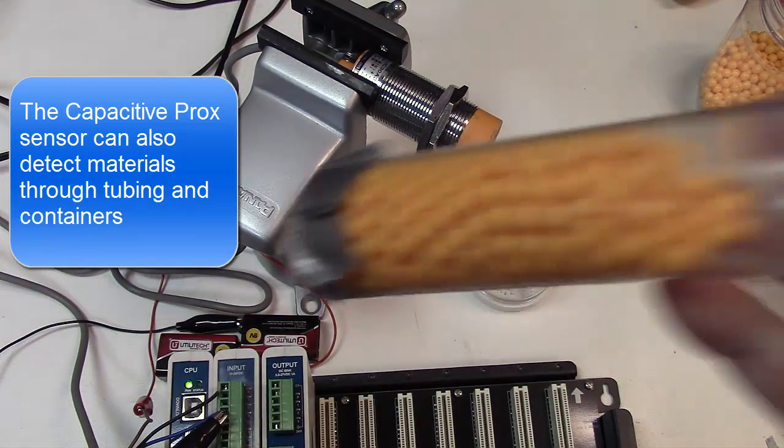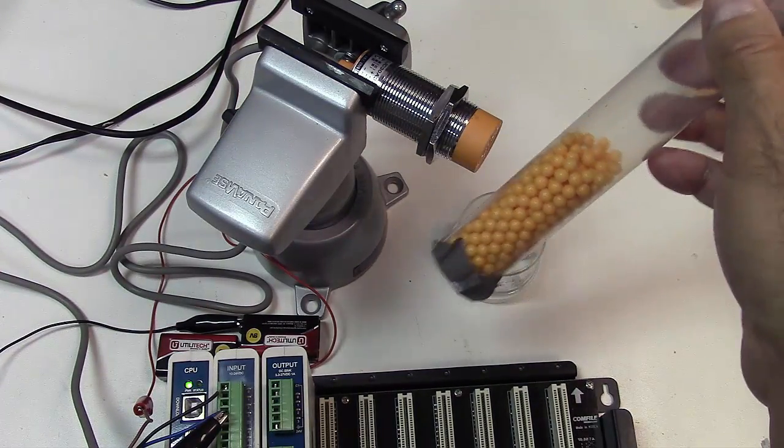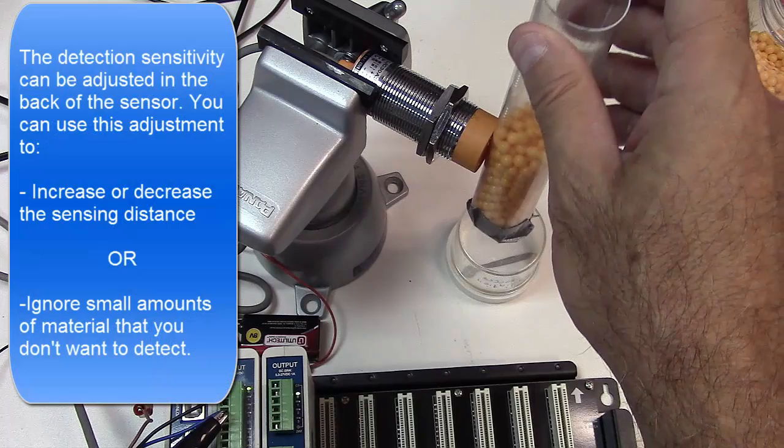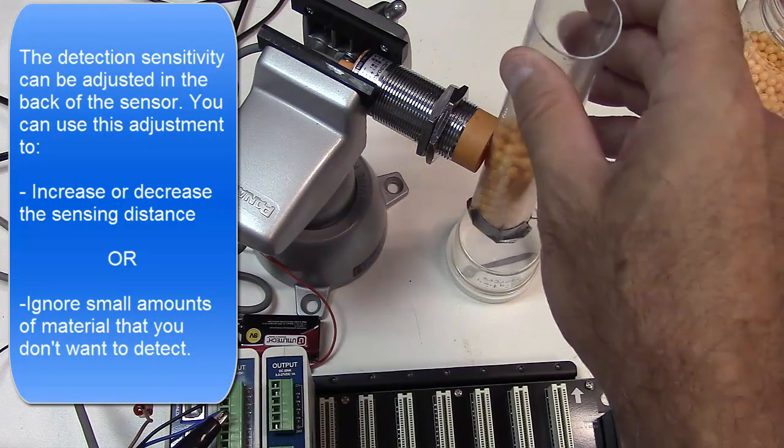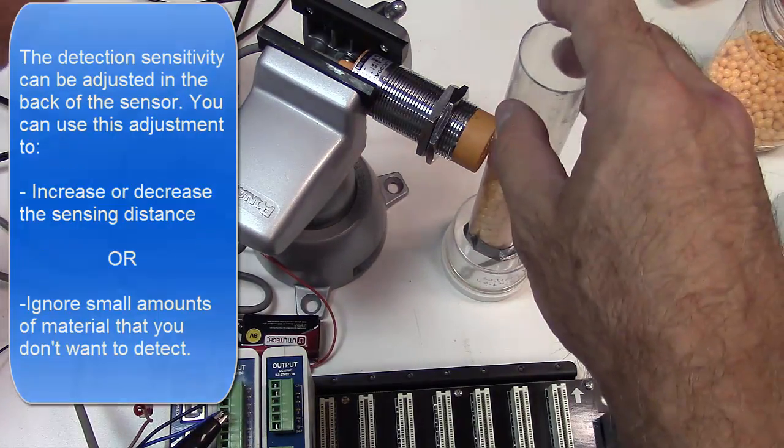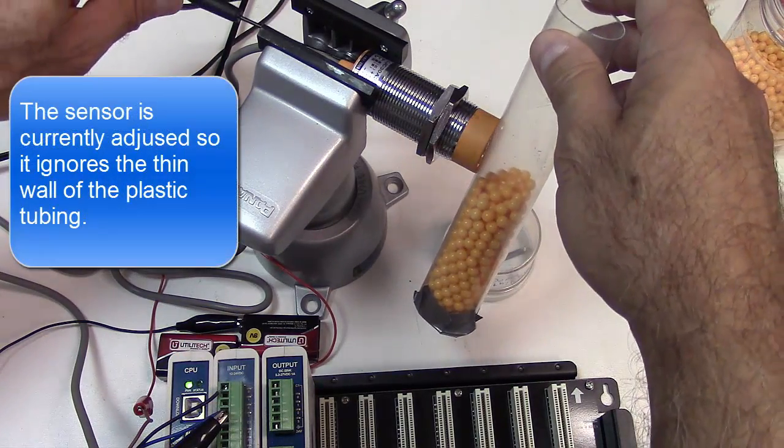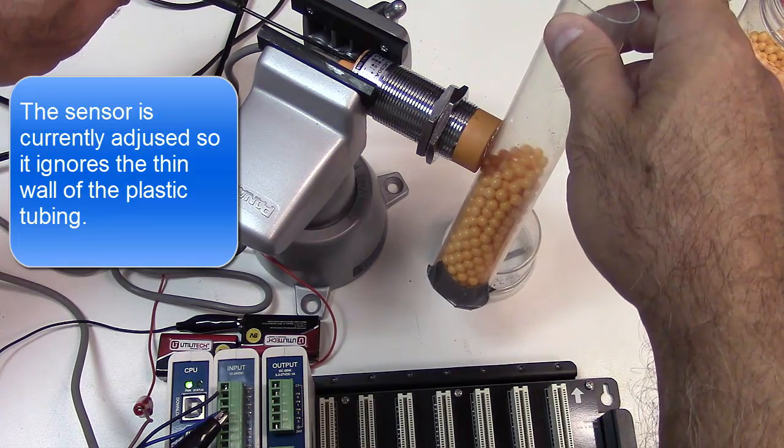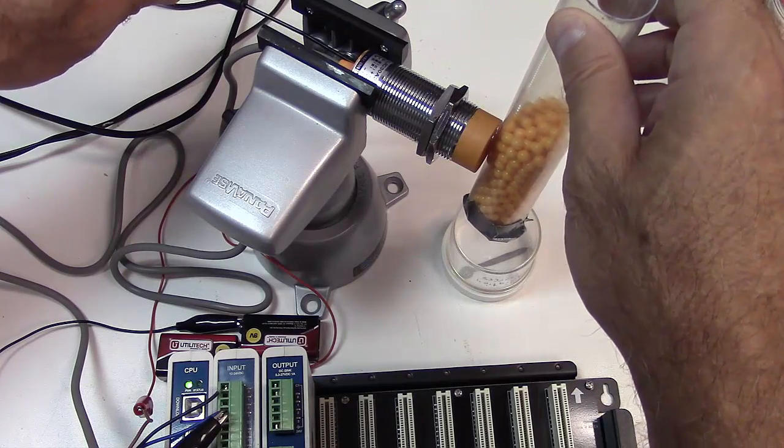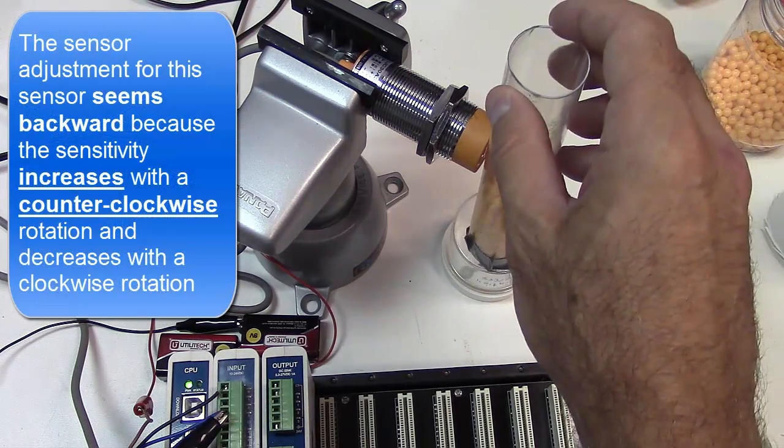So right here I have a tube with some Airsoft BBs in it. I'm going to adjust the sensitivity of the sensor so that it doesn't detect this plastic, but it does detect the plastic or the material inside when I get it adjusted properly. There is an adjustment screw on a capacitor sensor that allows you to do this. So right now it's adjusted so it doesn't see just the plastic tubing itself, but I'm going to set the adjustment screw so that when I get to the material inside it does sense the material.